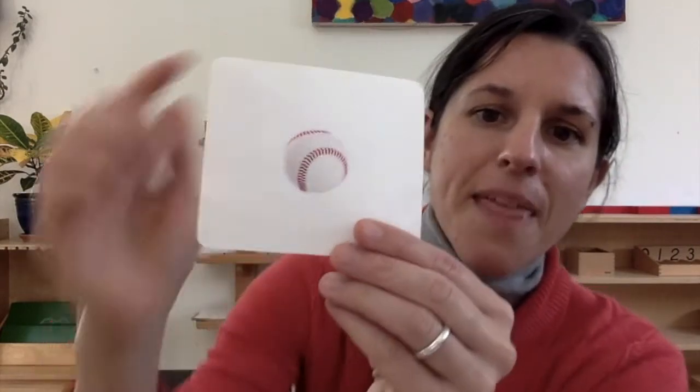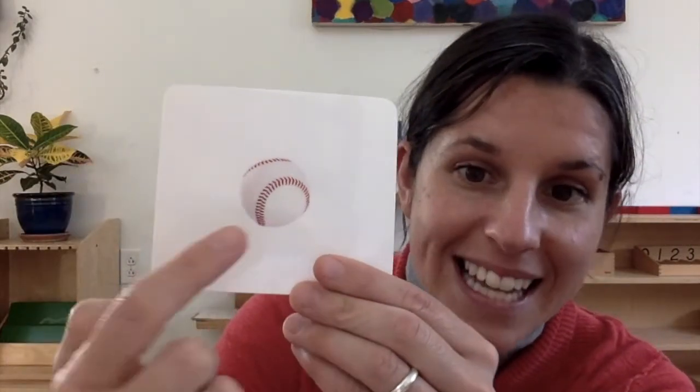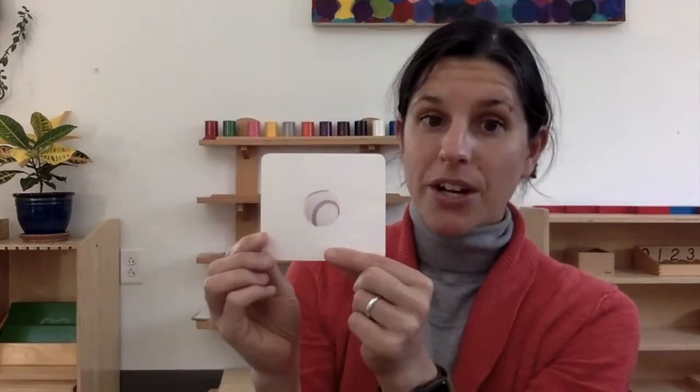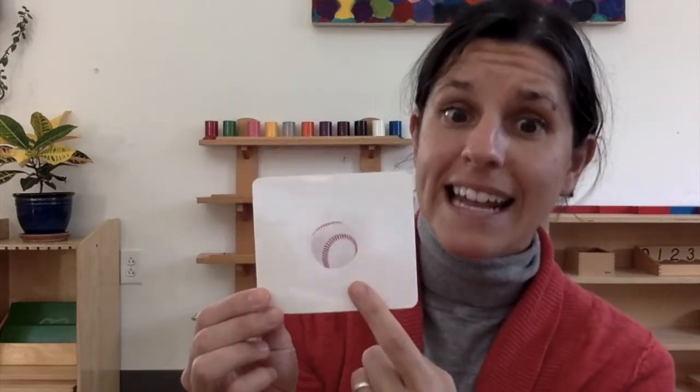The ball that goes with the baseball bat looks like this. Baseball. The baseball is white and it has red thread in it like this. Baseballs are hard and heavy. It hurts to get hit by a baseball, so you have to be really careful with them. They're not as soft as a tennis ball.